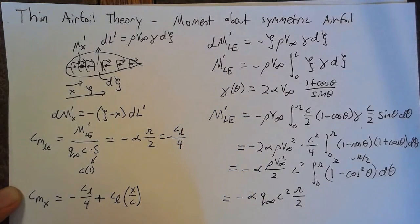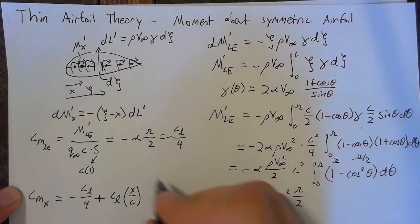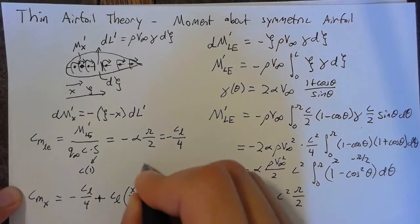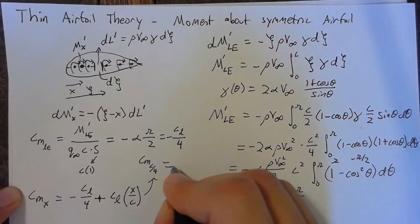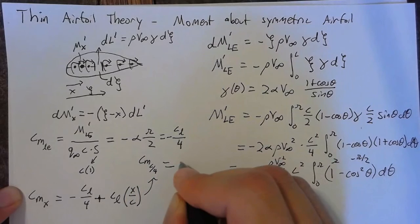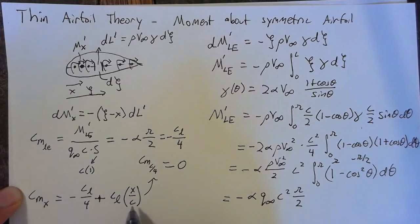Specifically, the thing we're interested in is the moment about the quarter chord is therefore going to be equal to 0. Since substituting in c/4 here gets 1/4, these cancel, and we end up with 0.